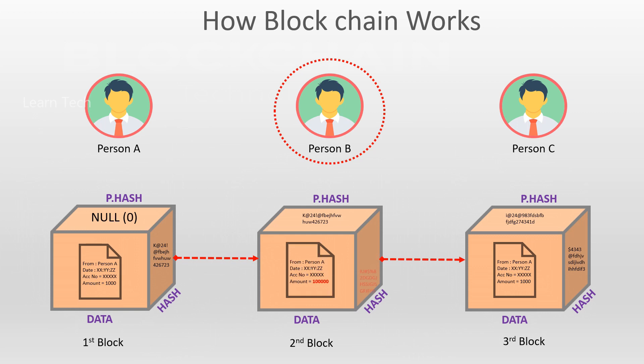The hash value has changed. If you change the hash value in one block, the next block still holds the old hash. In the third block, there is the hash value of the second block. So when that hash changes, the third block becomes invalid. To fix that, you would have to change the third block too, then the fourth block, and so on — cascading through the entire chain.